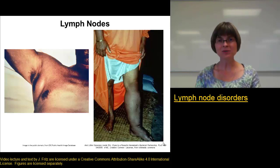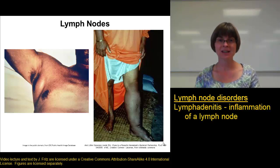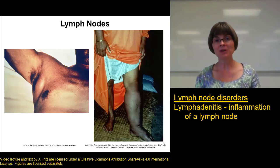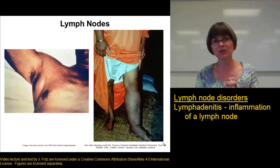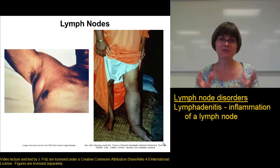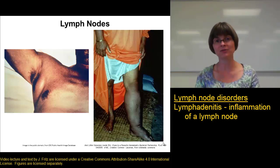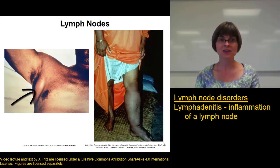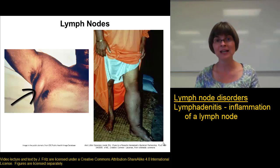A common problem with lymph nodes is lymphadenitis, which refers to an inflammation of a lymph node. This is common because of all the material swept up out of the tissues that ends up in the lymph node, so we can often get an infection or inflammation there. This tends to make the lymph node swollen, as you can see in this picture of a gentleman with a swollen lymph node in the axillary region, and they are usually painful as well.